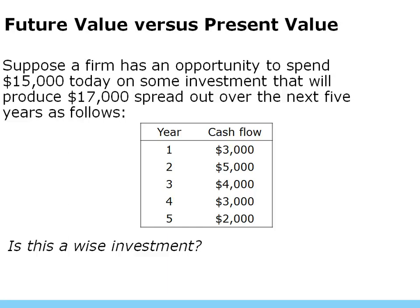Here's a slide: present value versus future value. Suppose a firm has an opportunity to spend $15,000 today on some investment that will produce $17,000 spread out over the next five years. So basically, they make an investment, spend $15,000, and this investment is going to produce a series of cash flows for the next five years. The question is: is this investment wise?